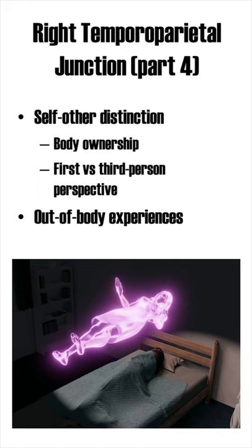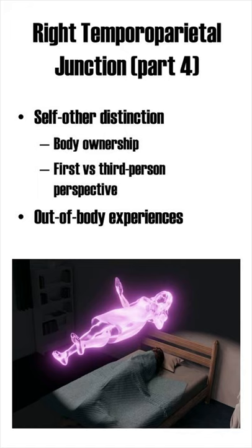To process a sense of self, the RTPJ is connected to the thalamus, sensory areas, and the anterior and ventral prefrontal cortex.